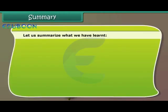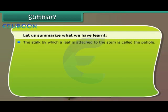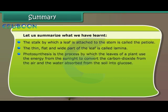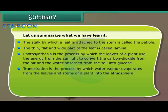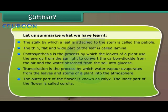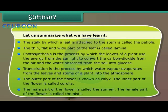Let us summarize what we have learned. The stalk by which a leaf is attached to the stem is called the petiole. The thin, flat part of the leaf is called lamina. Photosynthesis is the process by which the leaves use energy from the sunlight to convert carbon dioxide from the air and water absorbed from the soil into glucose. Transpiration is the process by which water vapor evaporates from the leaves and stems into the atmosphere. The outer part of the flower is known as calyx. The inner part is called corolla. The male part of the flower is called the stamen, and the female part is called the pistil.